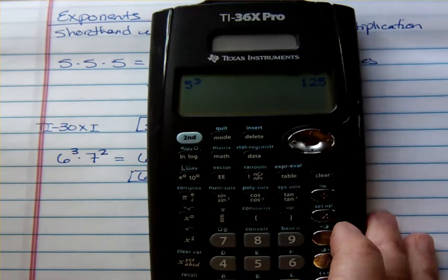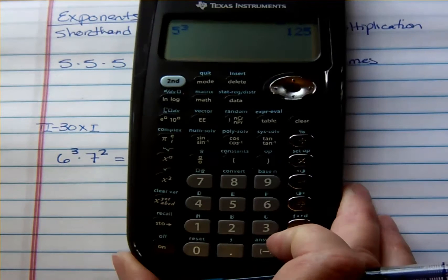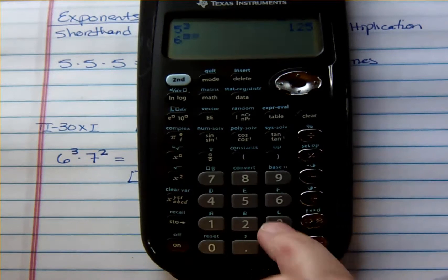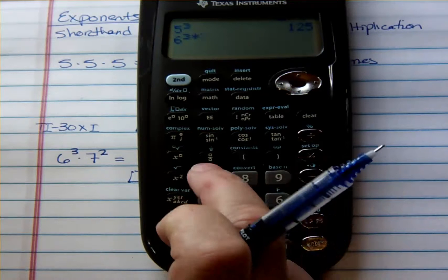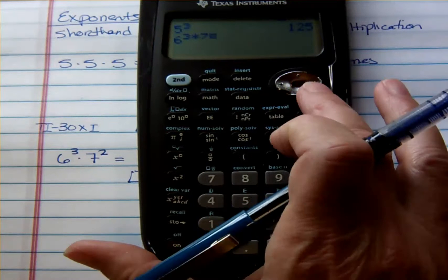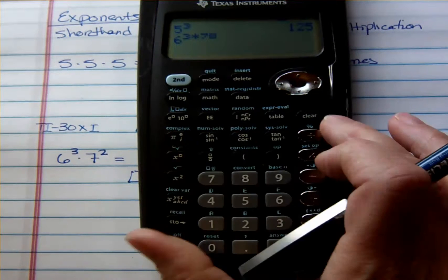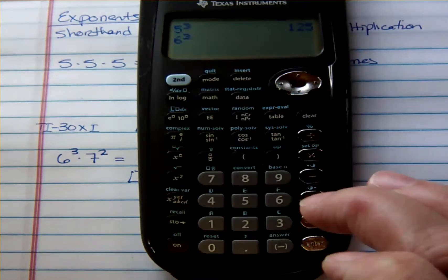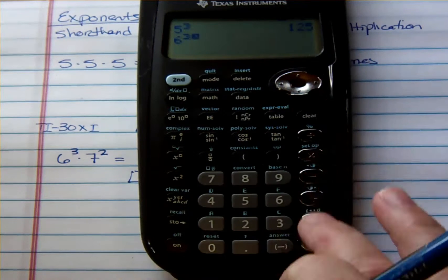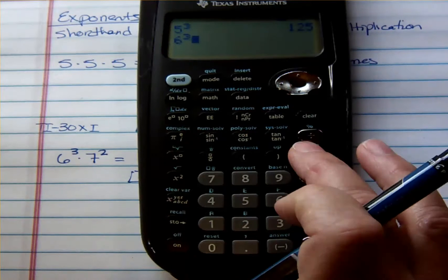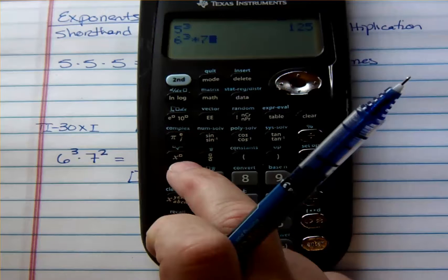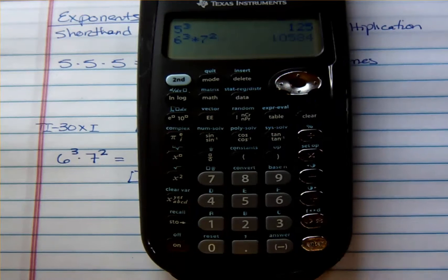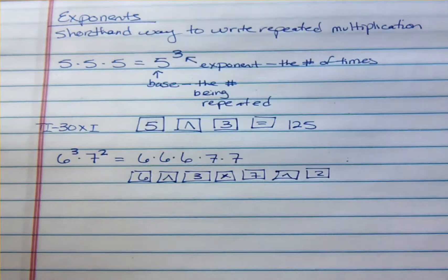Let's see it on the TI 36X Pro. You have 6, exponent button, to the third power, times 7. I don't want to drift up there in the exponent, so I'm going to delete those and come down using my arrow button, then times 7. I can just hit second power — there's a nice button for that. So I get 10,584.